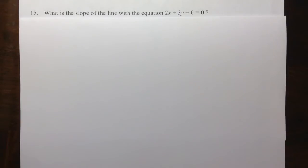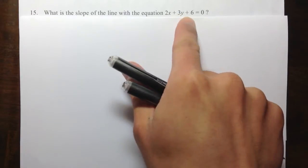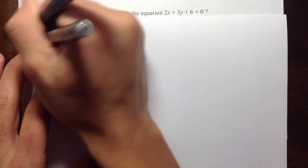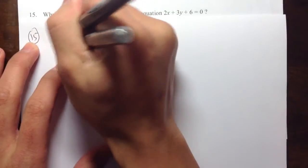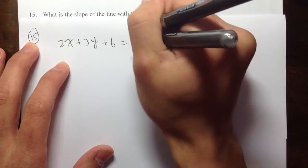Question 15. What is the slope of the line with the equation 2x plus 3y plus 6 is equal to 0? So let's get to work. I have 2x plus 3y plus 6 is equal to 0.